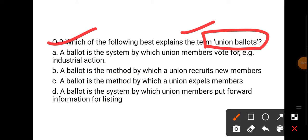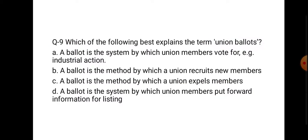Union ballot is a system by which union members vote and a selection is made. Options include: a ballot where union members vote; an area where new employees are recruited; a ballot where the union expels members; or a system where union members put information for listing. Union ballot is a secret ballot — secret ballot mein hum members ko voting ke form mein participate karate hain.